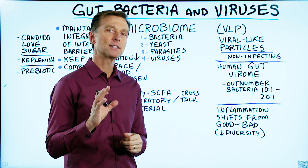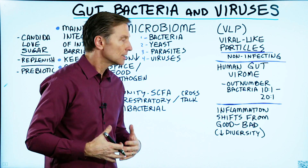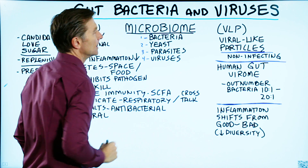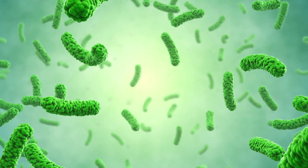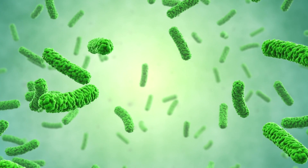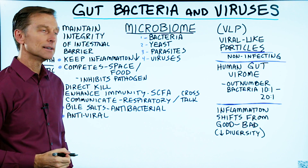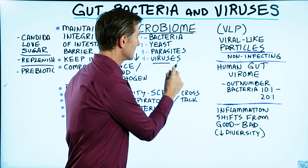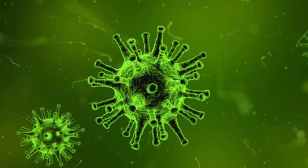Let's talk about the relationship between your gut bacteria and viruses. In your gut, you have something called the microbiome. That's a combination of not just friendly bacteria, but you also have yeast in there, you have parasites, you have even candida, and viruses. There's something called VLP, viral-like particles, and you have a lot of these in and around your body.